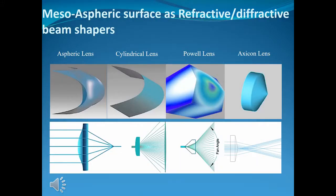You can use diffractive optical elements or refractive optical elements for beam shaping. We use mesoaspheric elements, which are a combination of these two. We develop a model for it, and then we design what we want using our knowledge. It results in custom-made optical structures, and then we combine these optical elements to create this magic carpet of light.